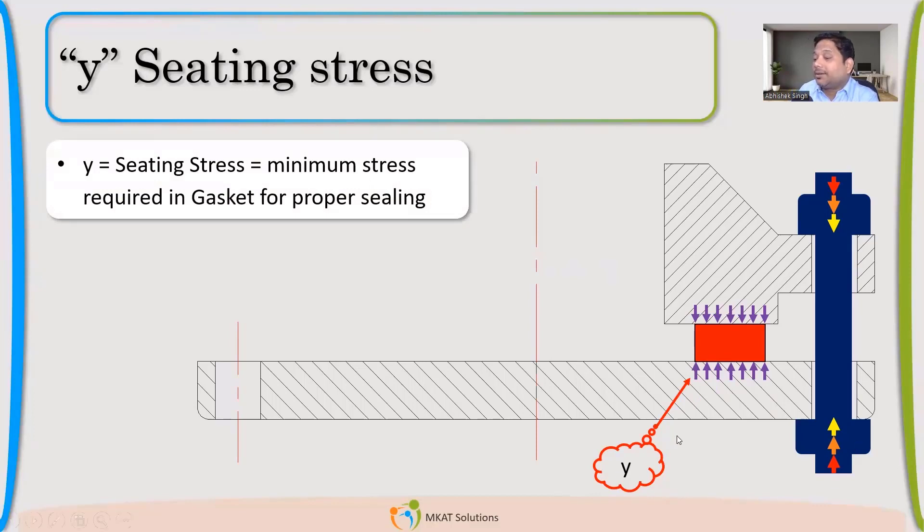And whatever stress now you see here, which is developed, and that is just sufficient to stop the leakage. At this stress, actually, your gasket starts working. Getting it? This is not the crushing strength, Amul. This is the strength at which the gasket starts acting as a gasket. It will stop leakage. It needs a minimum stress that is called the seating stress. And that is the property of the gasket.